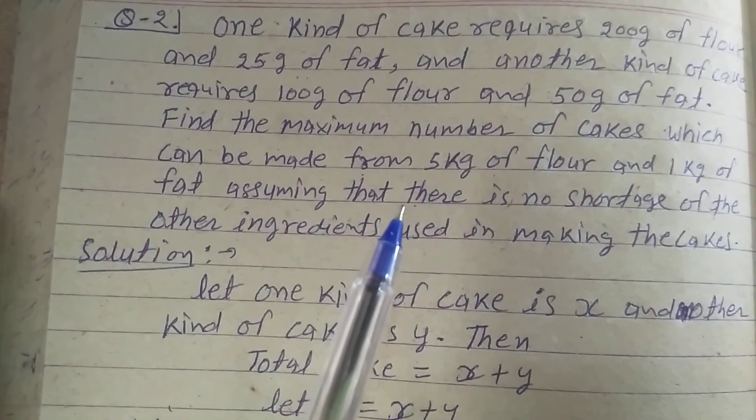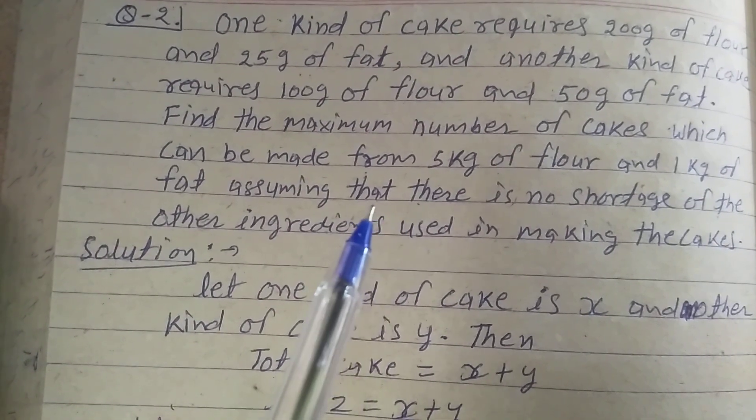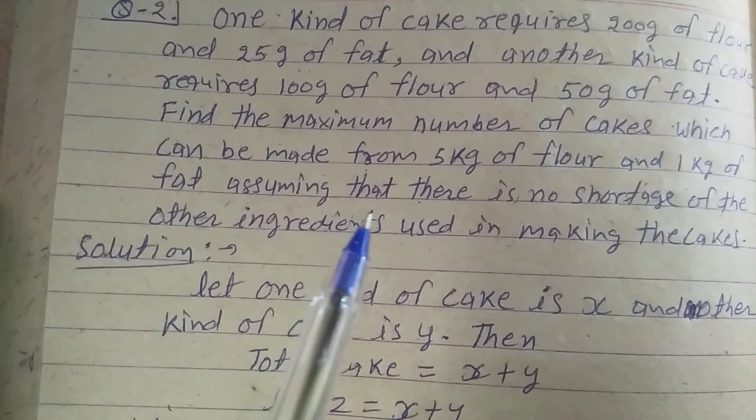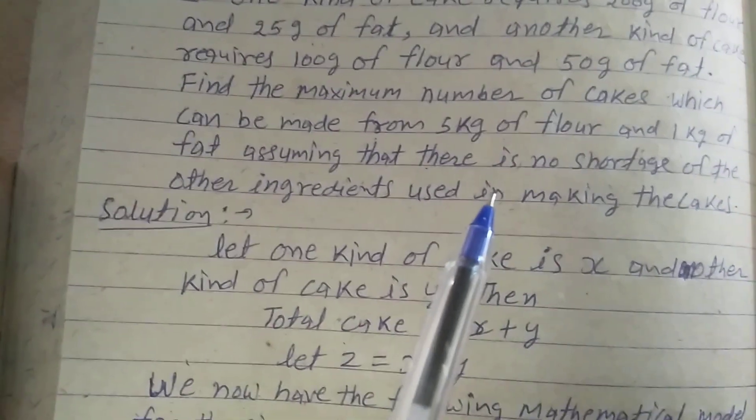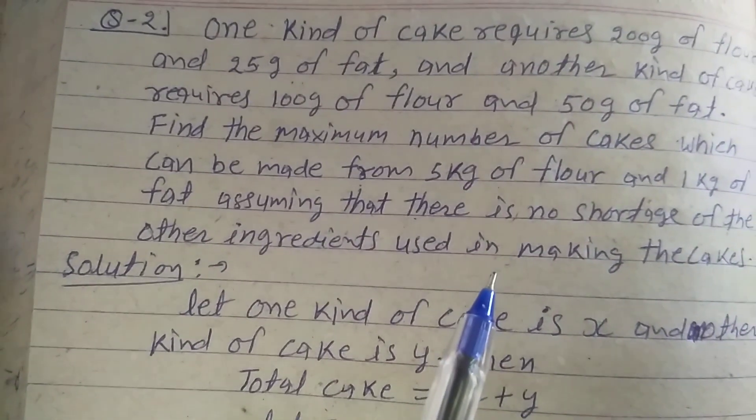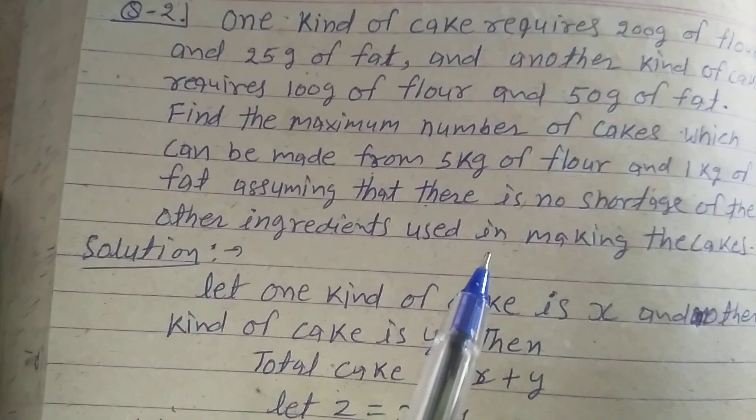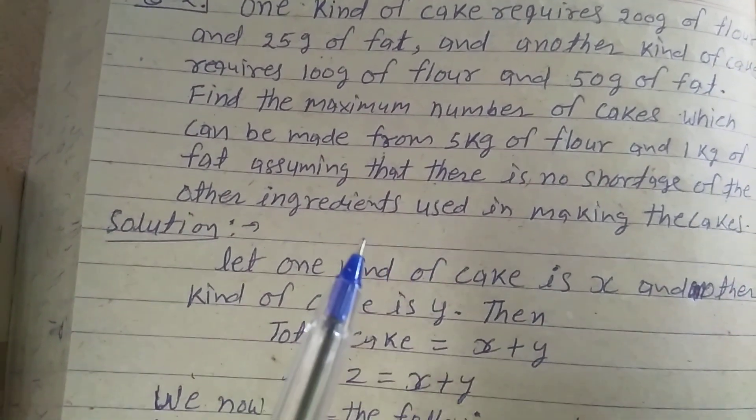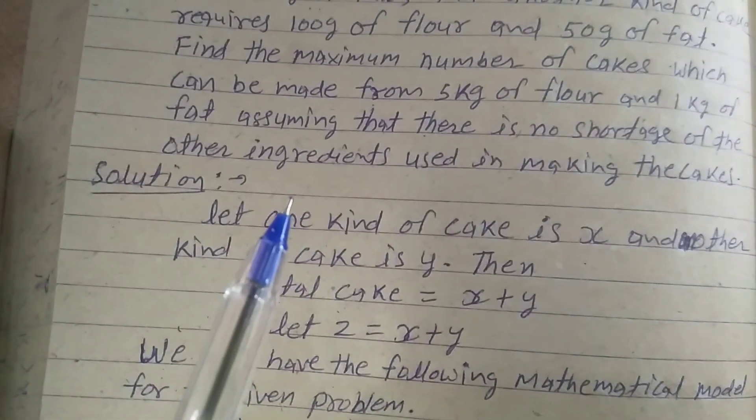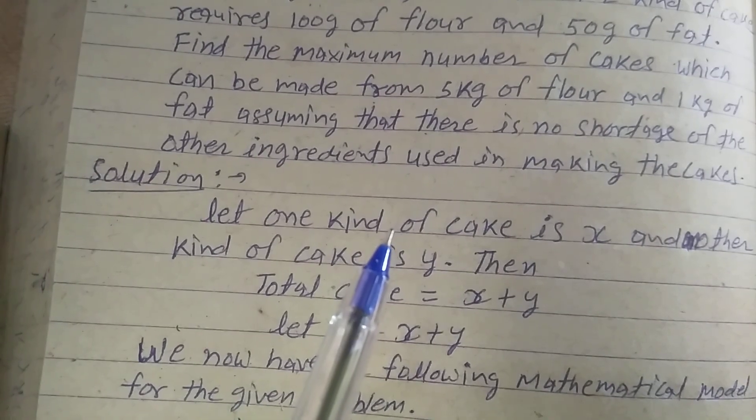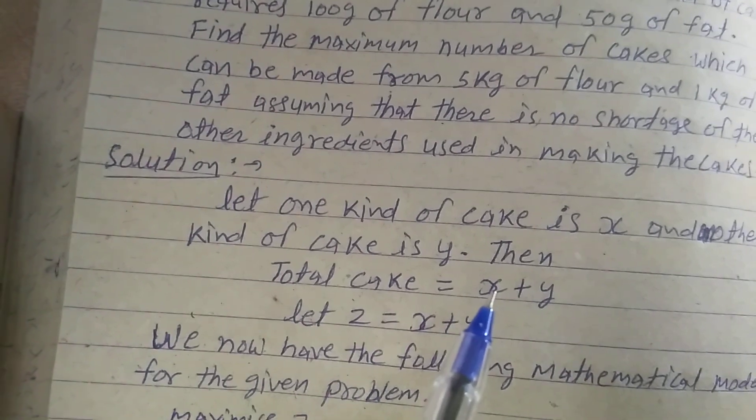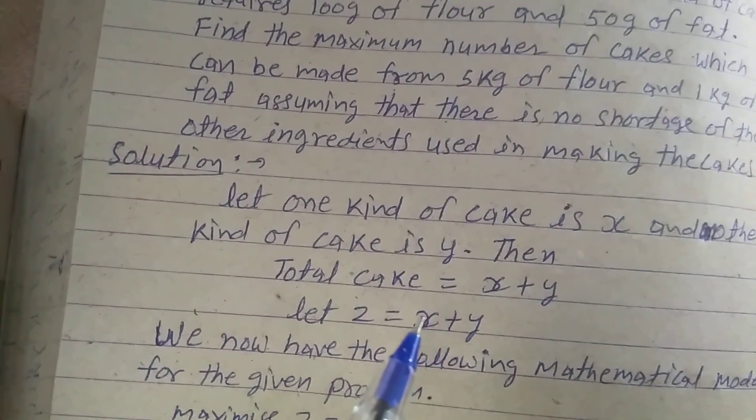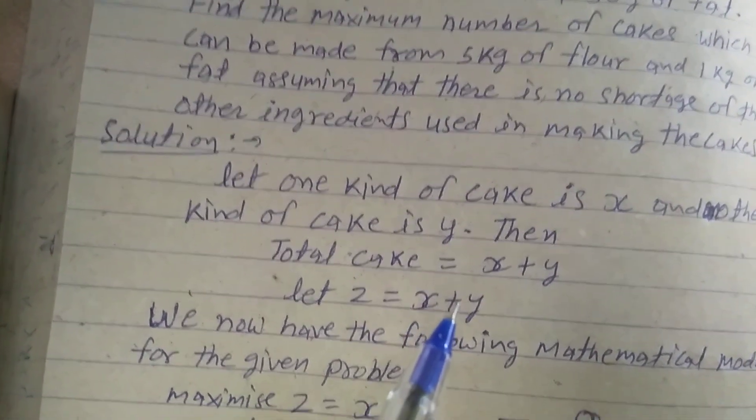Find the maximum number of cakes which can be made from 5 kg of flour and 1 kg of fat, assuming that there is no shortage of the other ingredients used in making the cakes. Solution: Let one kind of cake is x and another kind of cake is y. Then total cake is equal to x plus y. Let z is equal to x plus y.